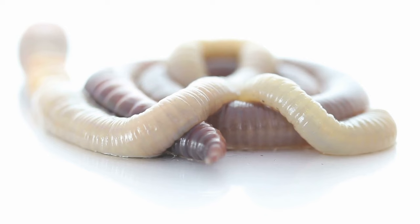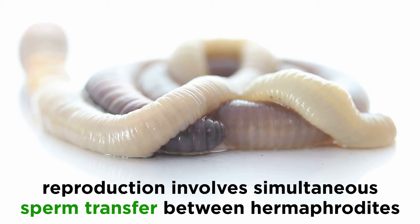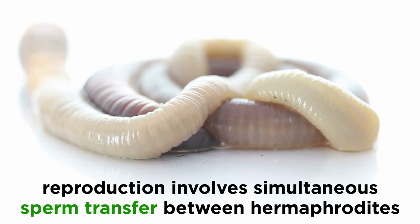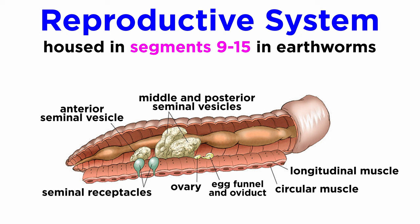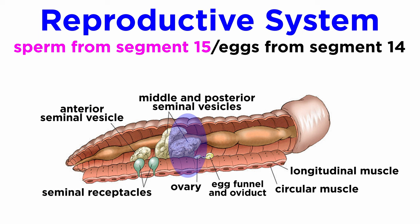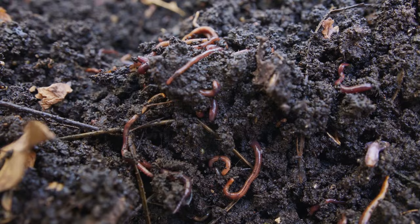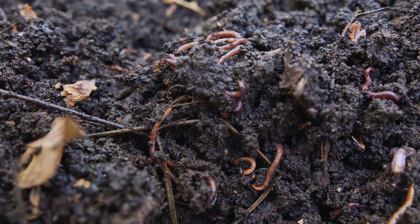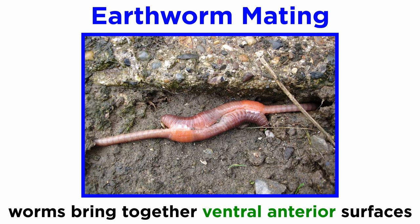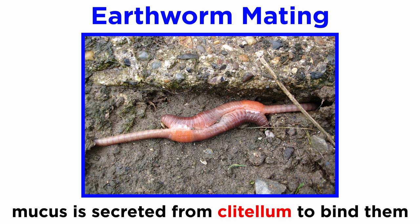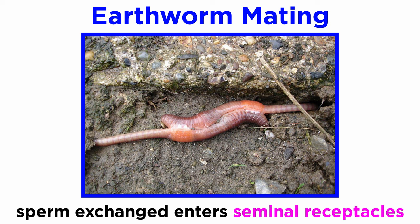Communication between individual worms is incredibly important, especially during mating. Reproduction in earthworms is complex and involves simultaneous sperm transfer between hermaphrodites. Their reproductive organs are housed in segments 9 to 15. Their male organs consist of two pairs of testes and two pairs of sperm funnels surrounded by three large seminal vesicles. Sperm is expelled from segment 15 during copulation, and eggs are discharged from segment 14. Earthworms may mate any time of year as long as warm, moist weather prevails at night. Before mating, they poke their heads into the burrows of their neighbors looking for a partner. If they encounter another earthworm, the two extend their anterior ends and bring their ventral sides together, secreting mucus from their clitellum that temporarily glues them together. Simultaneously, they discharge sperm, which travel down their ventral groove into the seminal receptacles of their partner.